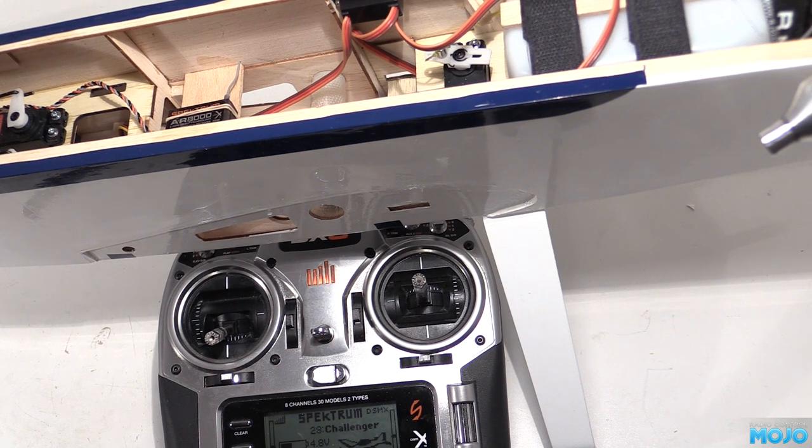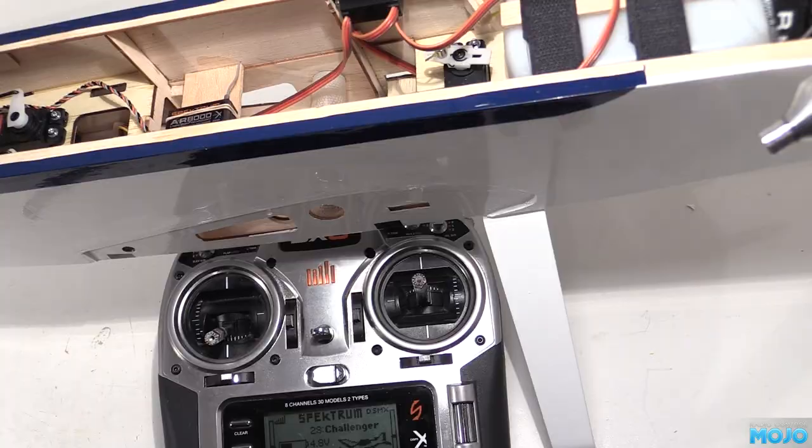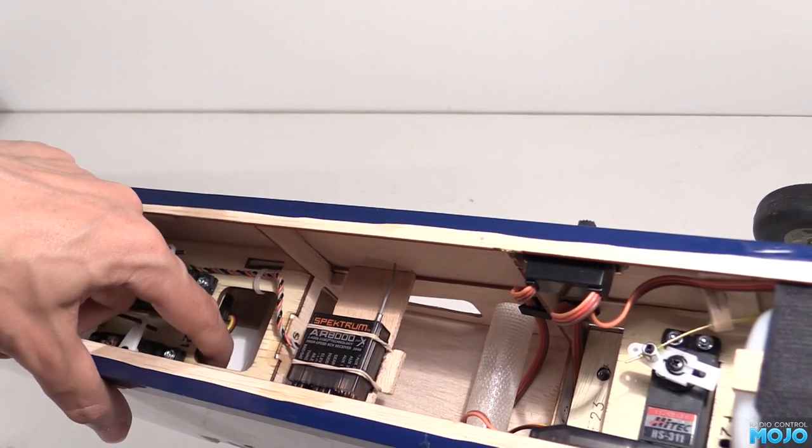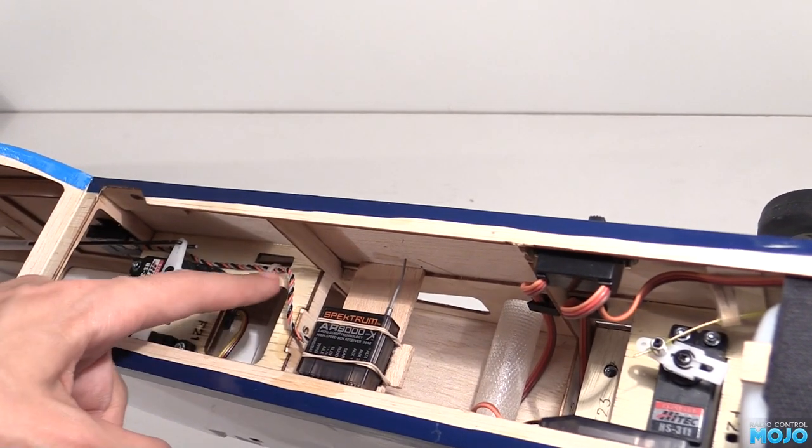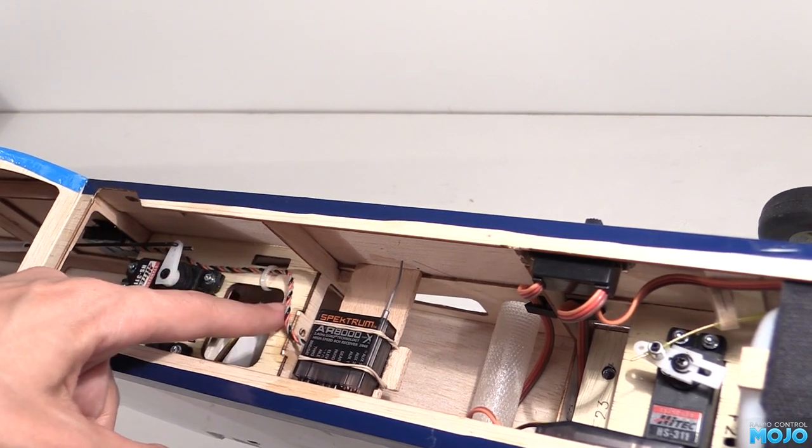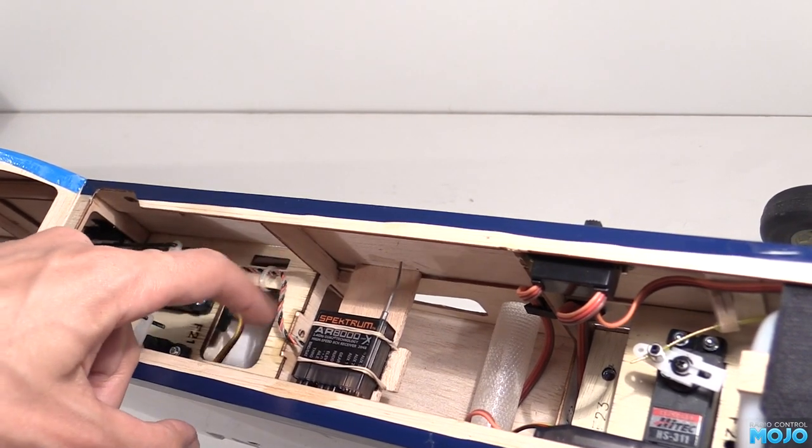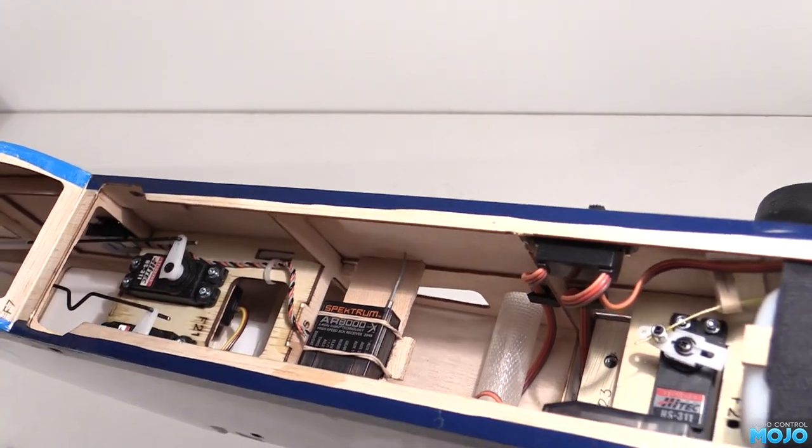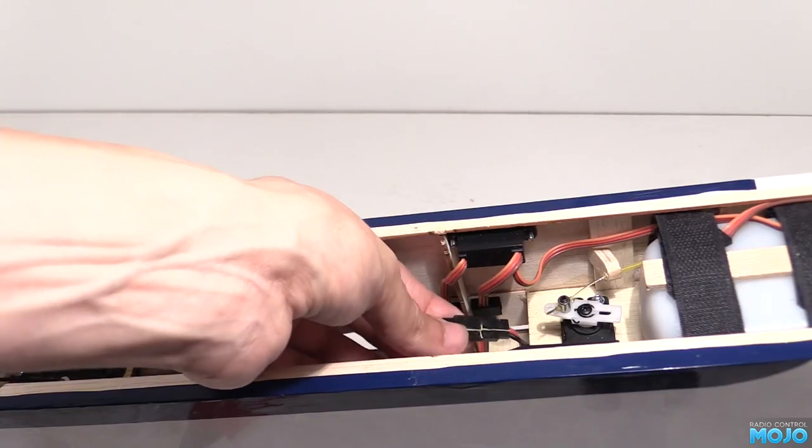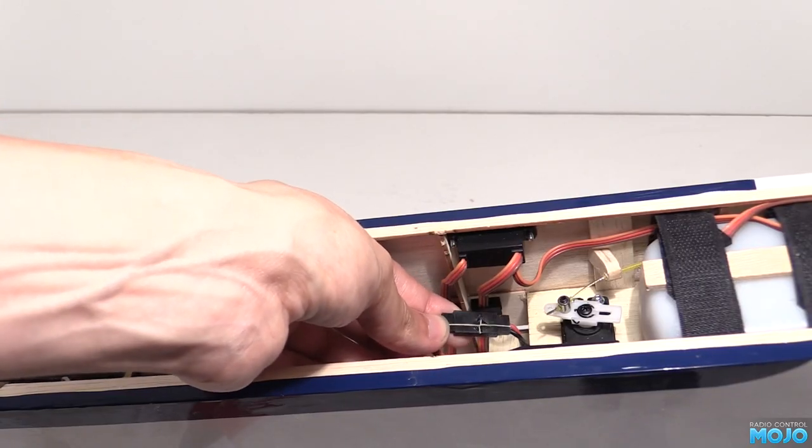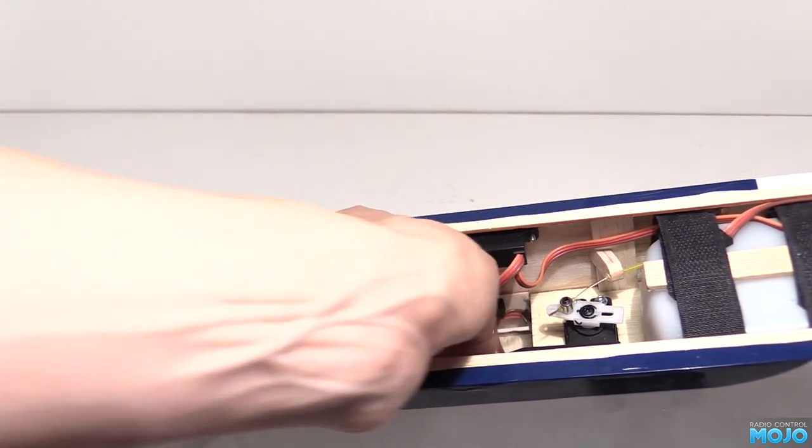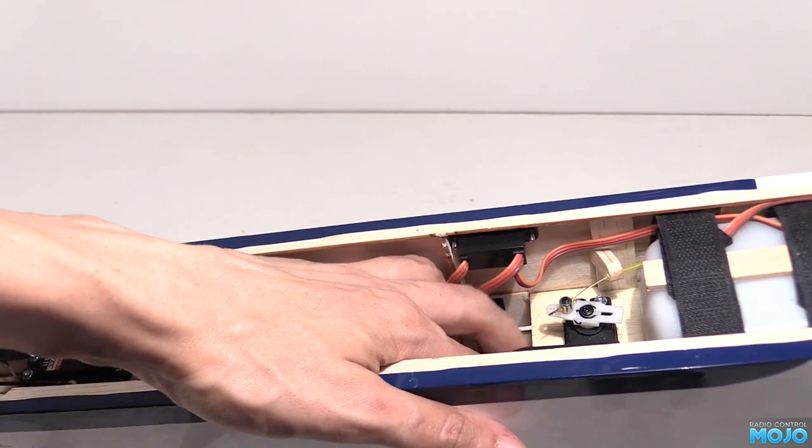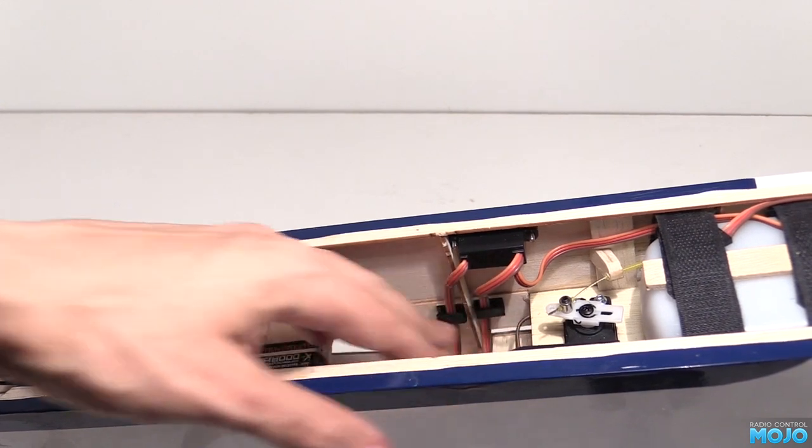One more thing I can definitely add though. In a model plane you really don't want to have all the wiring able to flap around inside. So having the wires neatly strapped down is a good thing to do. You can get various cable clips and zip ties. Just use them carefully so the wiring doesn't move any more than it needs to.